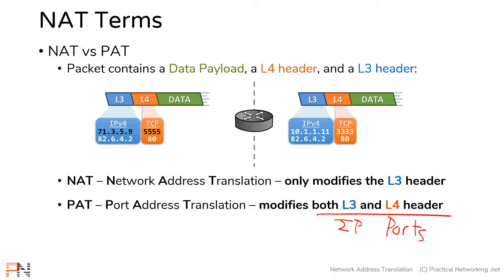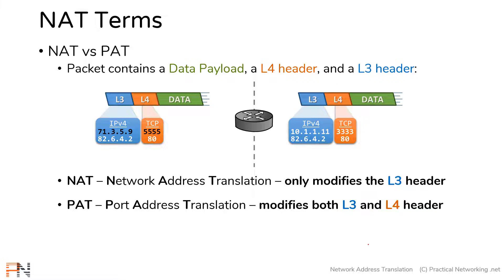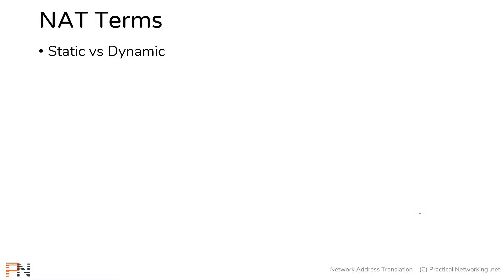Now, there is a way to do a PAT that only modifies the layer 4 header, but that's pretty rare. Most of the time when you're doing a modification of the layer 4 header, you're also modifying the layer 3 header. So it's pretty safe to memorize PAT as a modification of both the layer 3 and the layer 4 header. Which brings us to the next two terms: static versus dynamic.